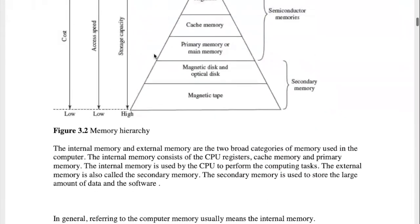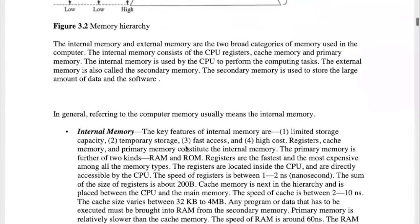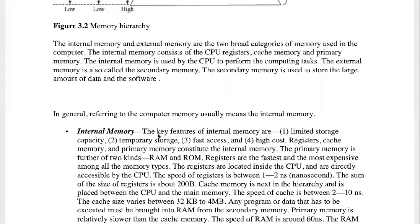The primary memory is the main internal memory. The access speed is related to the response time per operation. We also have secondary memory, which has lower access speed than primary memory.